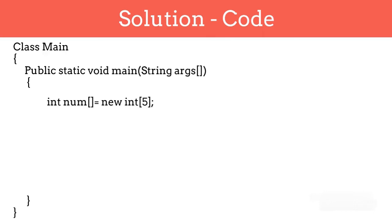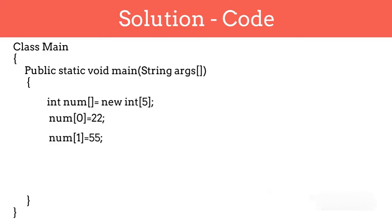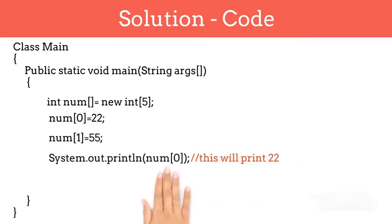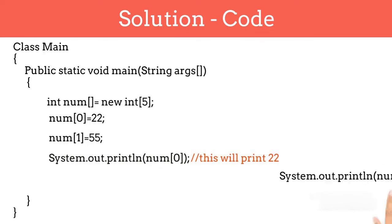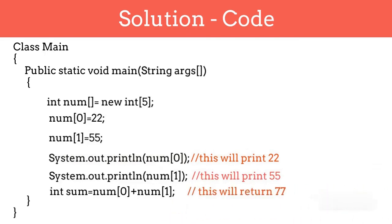We have learned that if we want to save numbers in an array, we can save them using indexes. For saving an element at the 0th position, we use num[0]; for saving at the first position, we use num[1], and so on. Similarly, to access the number at the 0th position, you use num[0]; for the first position, you use num[1] and so on. You can print this element, add this element, or perform whatever operations you want on it.